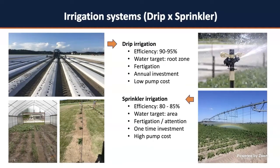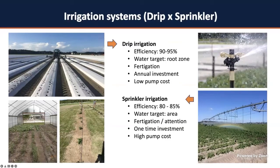There are several things to have in consideration when selecting your irrigation system. First, what crop are you growing? Will it respond better to drip or sprinkler? For most vegetable crops, I would recommend drip irrigation. However, if you have single rows like a potato field, a sprinkler would do better. You need to see what is the convenience for your system and your area, and then identify what irrigation system you should have.